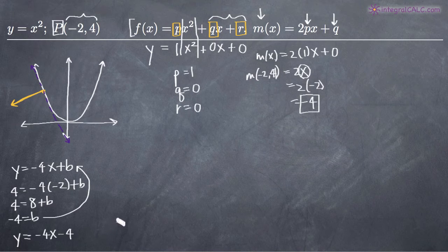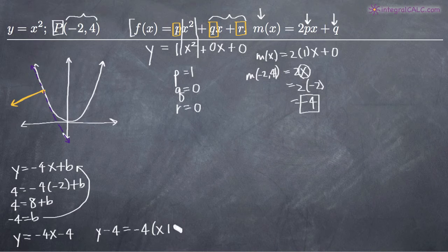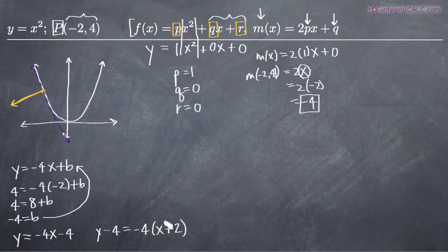If your problem asks for point-slope form, remember that's y minus y₀ equals m times (x minus x₀). So we would write y minus 4 equals negative 4 times (x minus negative 2), which becomes y minus 4 equals negative 4 times (x plus 2). That's the point-slope form of the equation of the tangent line.